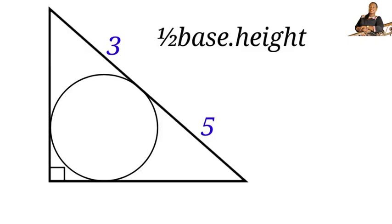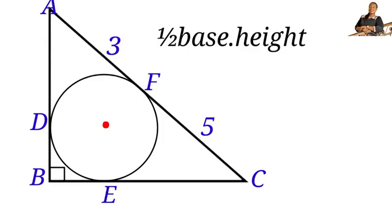To find the base and the height, first let us label our triangle. Supposing this is triangle ABC: this point is A, here is B, and here is C. Let us also label the points where the circle touches the triangle — let us call these points D, E, and F.